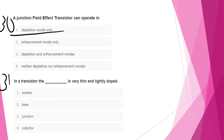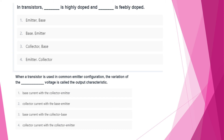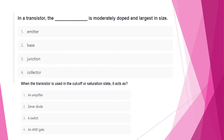In a transistor, the base is very thin and lightly doped. The emitter follower circuit works in common collector configuration. The emitter is highly doped and the base is feebly doped. The collector is moderately doped and large in size.